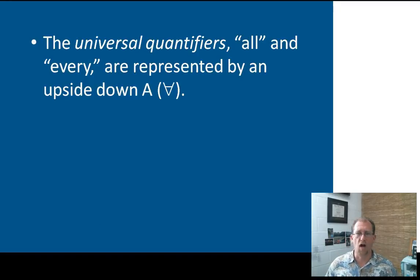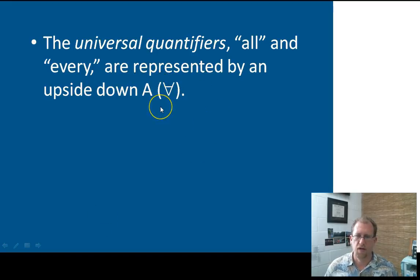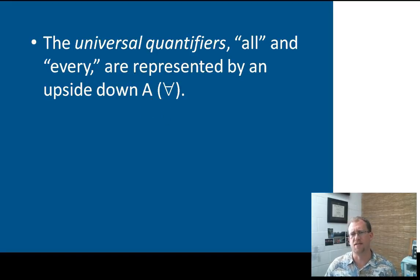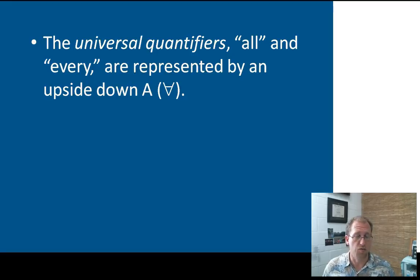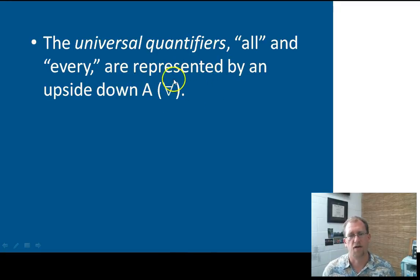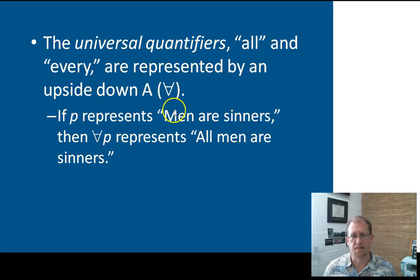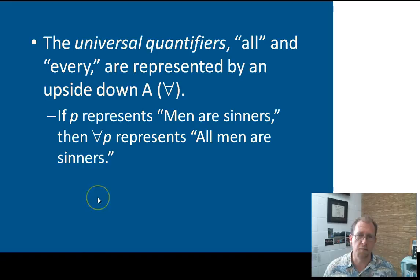Universal qualifiers — things like 'all' and 'every' — we represent with an upside-down A. So this A written upside down is the shorthand that means 'always' or 'every.' We have to be careful with statements like this in logic or geometry because it's very hard to have a universal statement be true unless you know it is something universally true. So if P represents 'men are sinners,' then this qualifier — every P — means 'all men are sinners,' or 'every man is a sinner.'